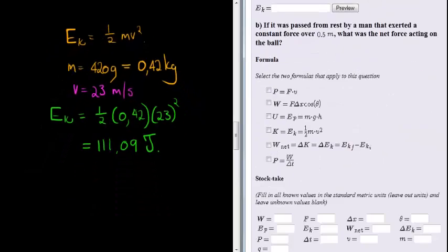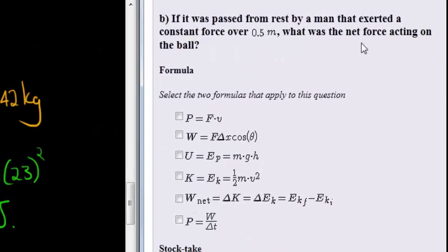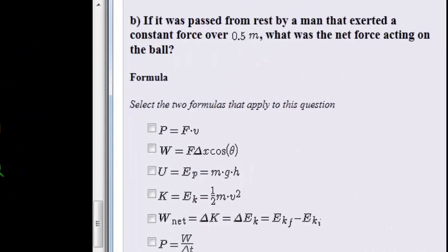Then they give us a little bit more information. They say that it was passed from rest. In other words, originally its kinetic energy was zero, its velocity was zero. But then a man applied a force to it, a constant force over 0.5 meters. And they ask, what was the net force acting on the ball?